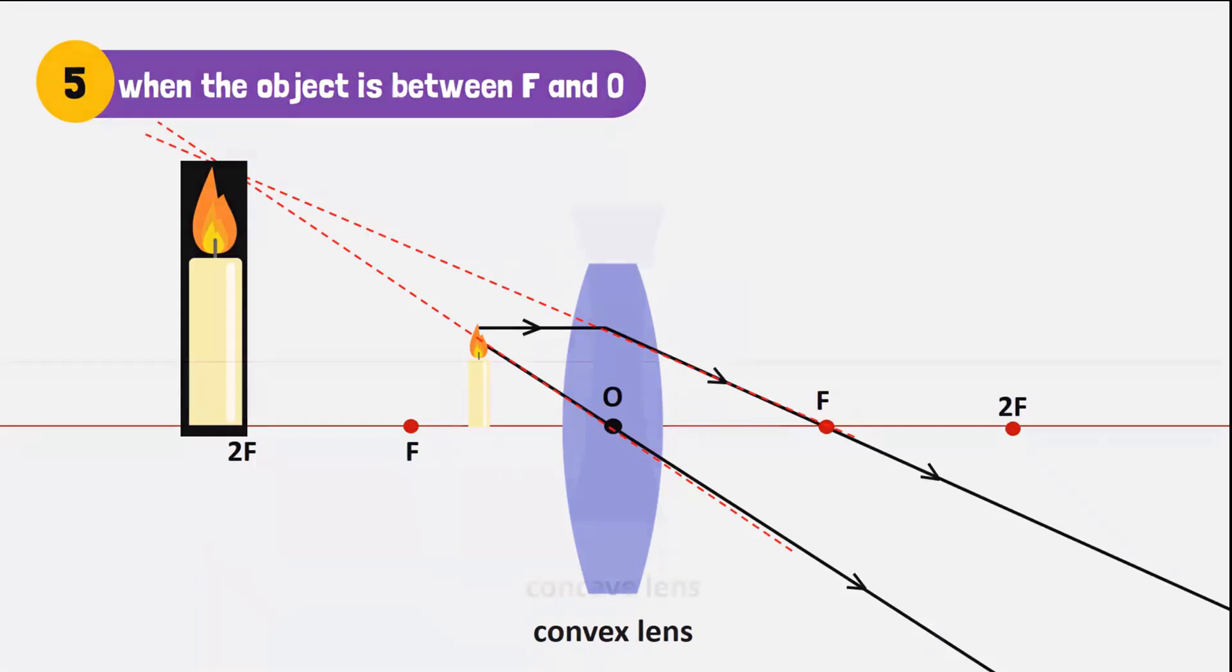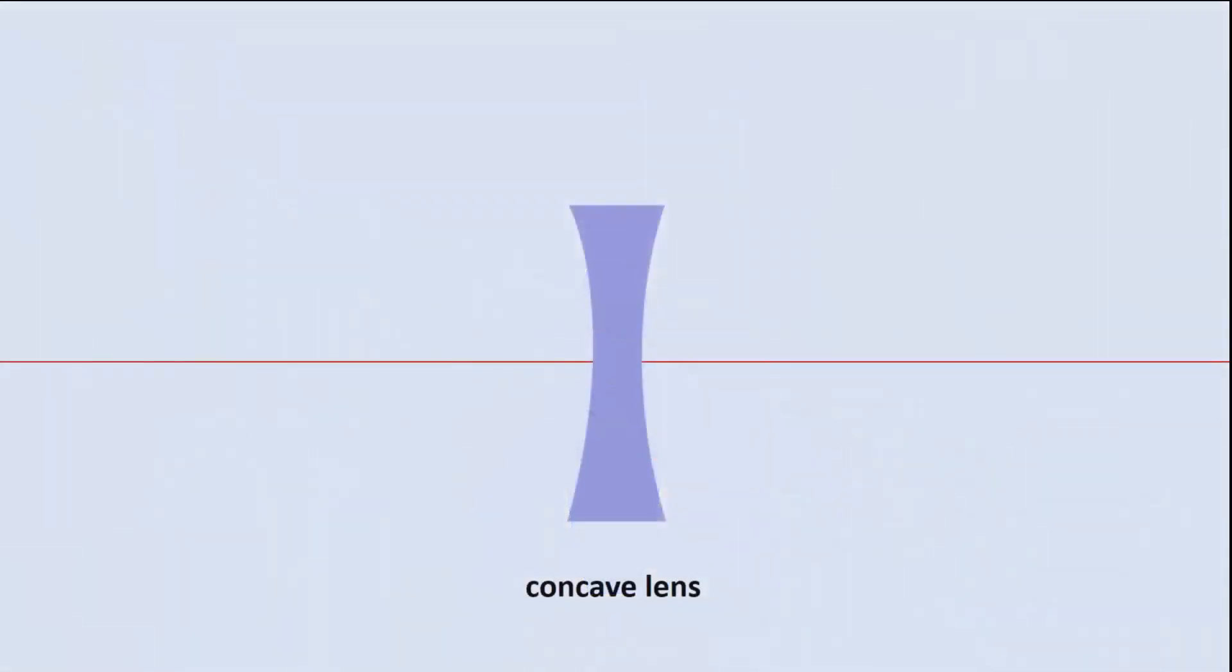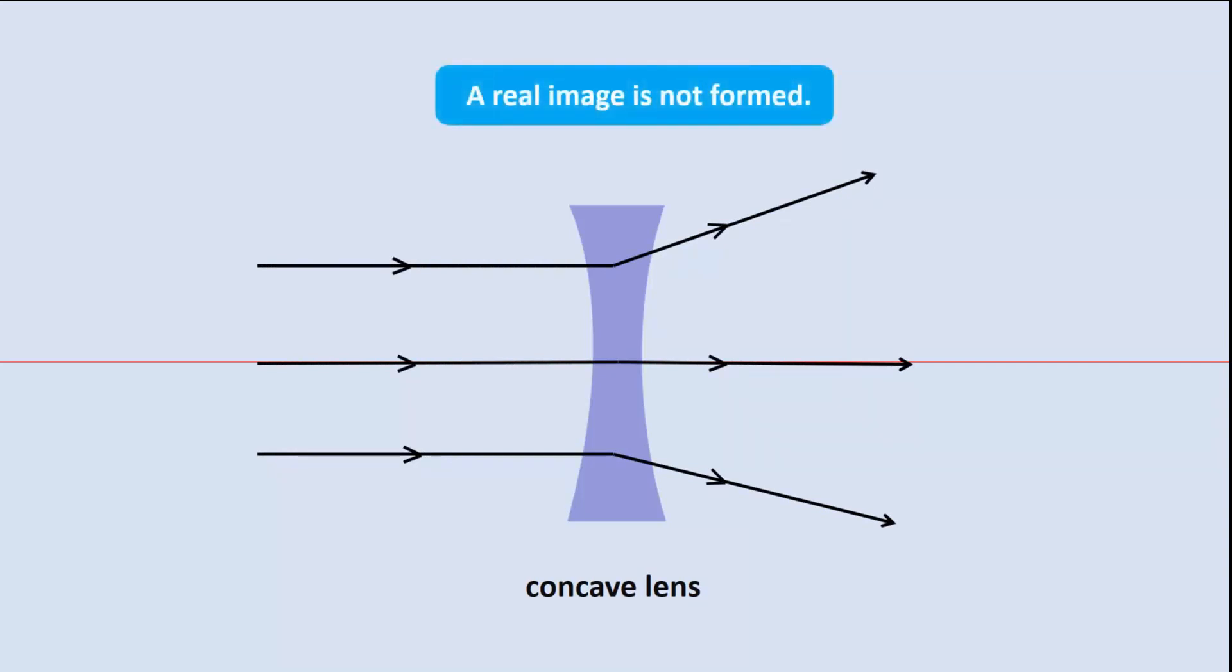But what about a concave lens? The rays always diverge, so the emerging rays do not actually get to meet. Thus, a real image is never formed.